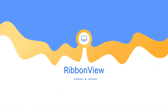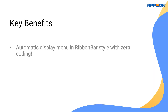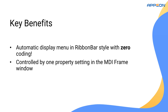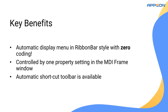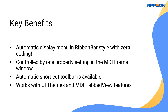RibbonView is a new feature introduced in PowerBuilder 2025 to enhance the menu object. It allows you to display classic menus in a modern ribbon-style layout with zero coding required. You can enable RibbonView with a single setting in the MDI frame window. Once enabled, it automatically renders your existing menu in a modern ribbon-style layout and even generates a quick access toolbar if one is available. RibbonView is fully integrated with PowerBuilder's UI themes and the tabbed view feature for MDI windows, ensuring a consistent and visually appealing look across the interface.